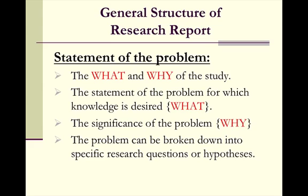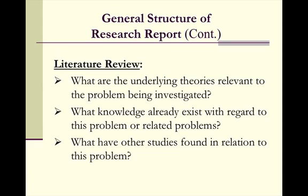Now generally, when you're structuring a research report, you begin with the what and the why of the study — basically what you're doing and why you're doing it. The problem can be broken down into specific research questions or hypotheses. The literature review is when you look at all the existing previous knowledge on the topic — basically what are the underlying theories relevant to the problem being investigated, what knowledge already exists with this problem, are there any related problems, and what have other studies found in relation to this problem.